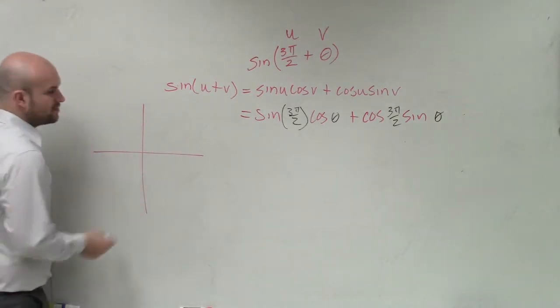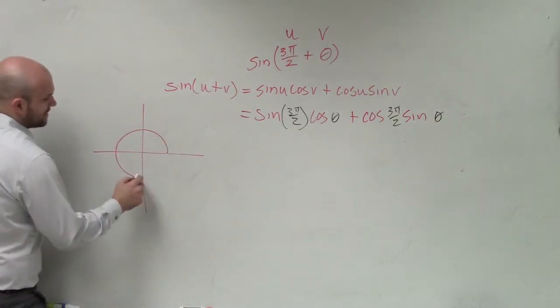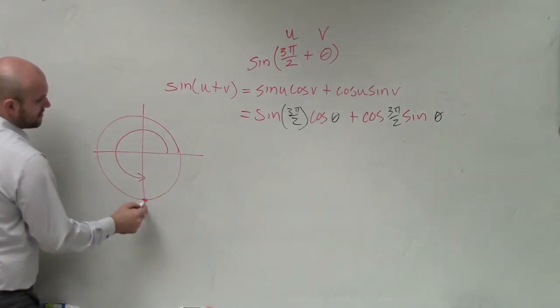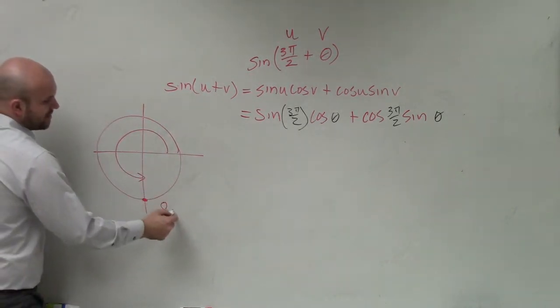And say, well, what is 3π over 2? Where is 3π over 2? Well, that's all the way right there. And on the unit circle, what is that coordinate point? 0, negative 1.